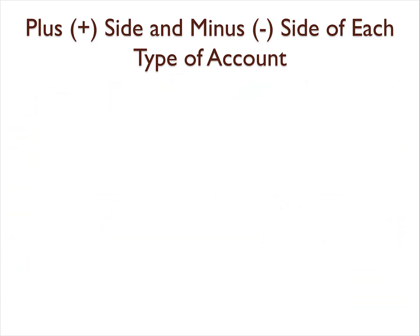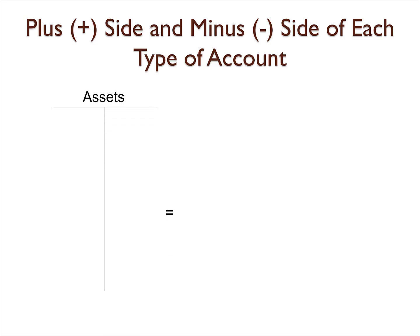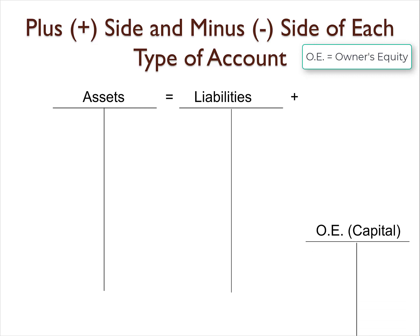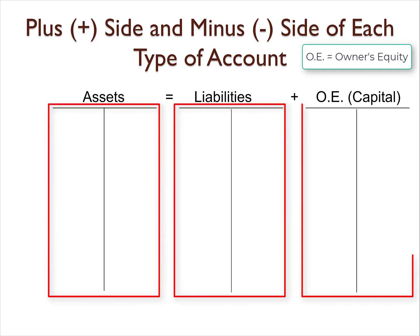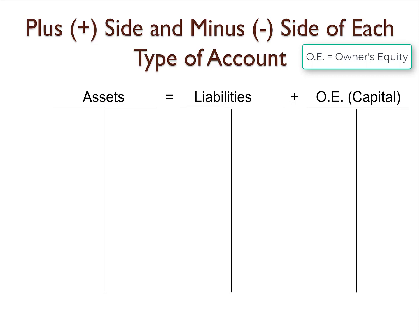To walk us through the process step by step, we first need to know the accounting equation. That's assets equals liabilities plus owner's equity, also called the capital account for sole proprietorships. Now, notice that each of these account types have a T-account drawn under each. So before we can figure out which side of each T-account is the increase side, we need to know which side is the debit side and which is the credit side. In accounting, debit simply means left side and credit means right side.